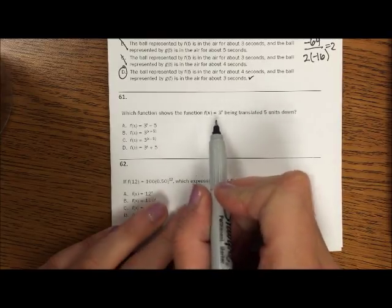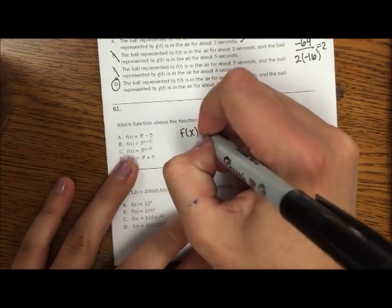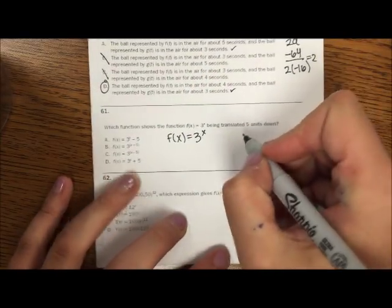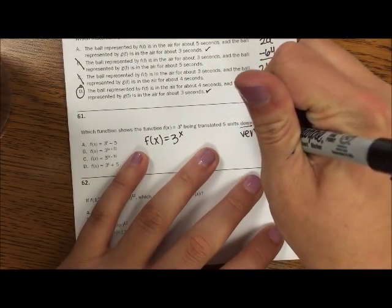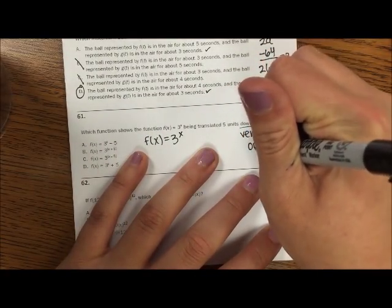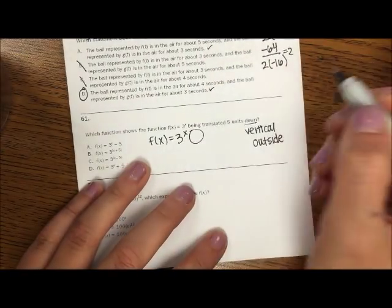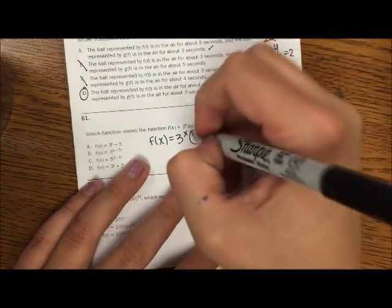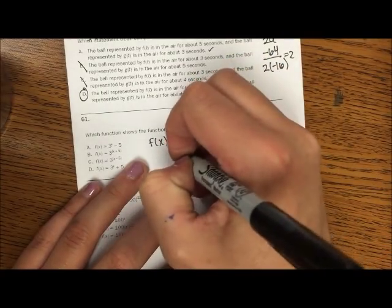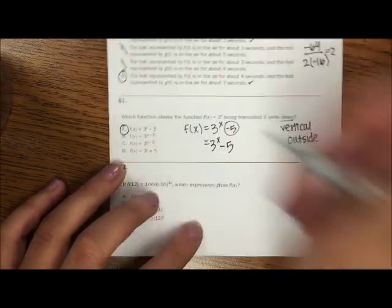Which function shows f(x) = 3^x being translated 5 units down. Well, down is vertical. And that's outside the house. Okay. And so outside the house would be like over here. And it is what it is. So it says down 5. We're going to move down 5. So that would be 3^x minus 5. So A.